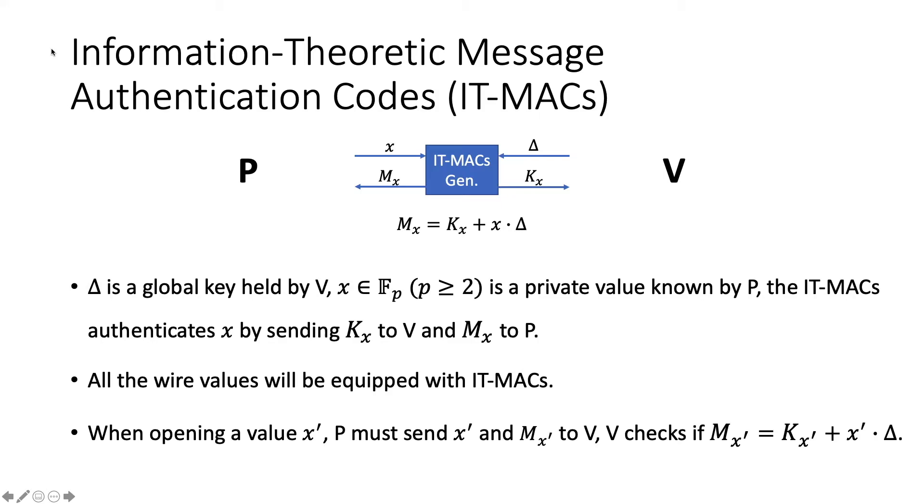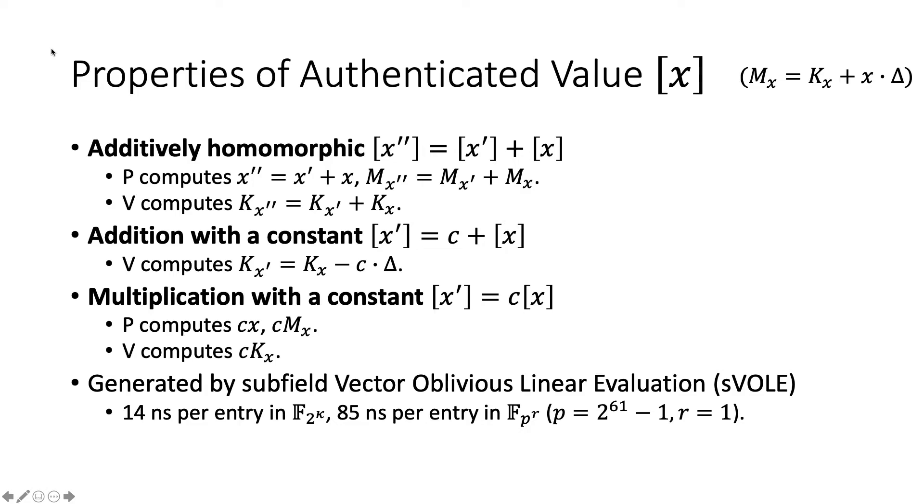If the prover wants to open a value x, it sends the x along with its MAC to the verifier. The verifier will check if this correlation holds. And if a malicious prover wants to modify a value x during the circuit computation, there is a negligible probability that it can provide the verifier with a correct MAC. For the value x with information theoretic MAC, we denote it by x in a bracket and call it an authenticated value. There are many nice properties of authenticated values. For example, they are additively homomorphic. It is free to do addition with a constant and multiplication with a constant. And also, these authenticated values can be efficiently generated by vector oblivious linear evaluation.